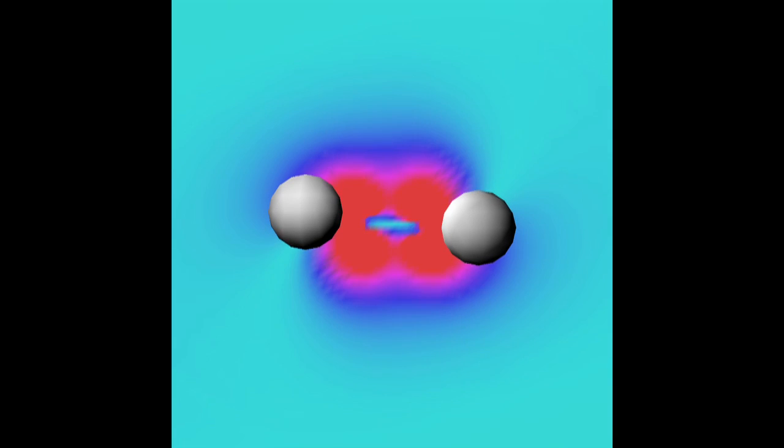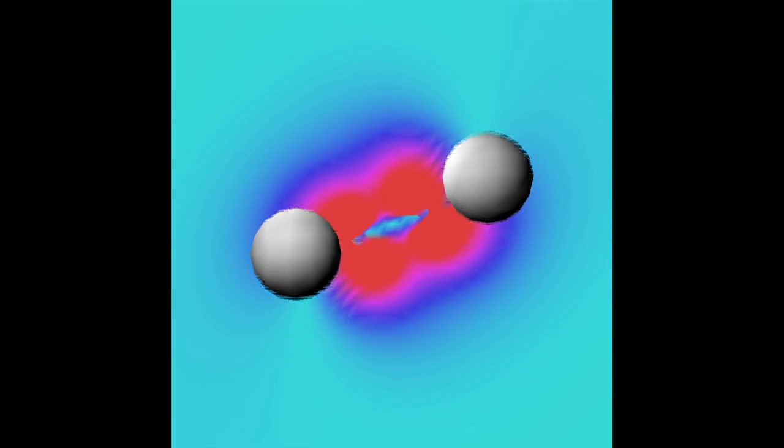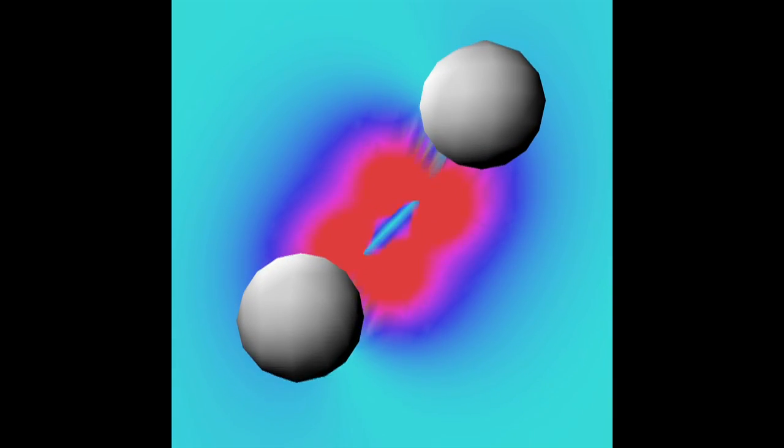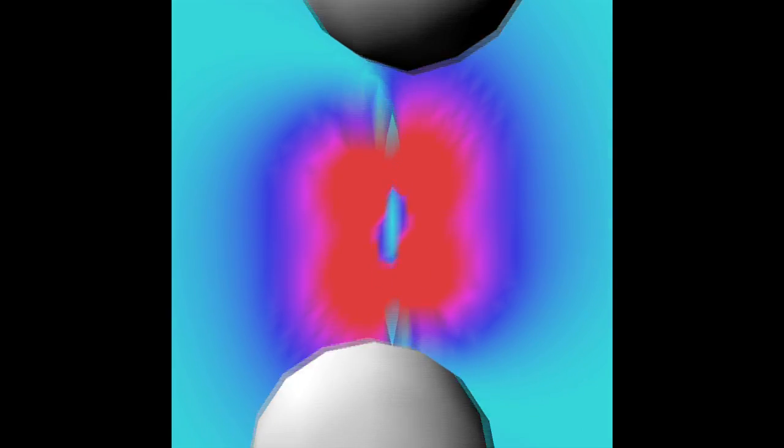The colors in the movie indicate the intensity of the curvature of space-time and the gravitational waves are ripples on this curvature.